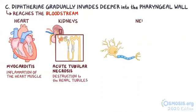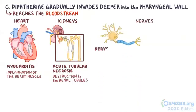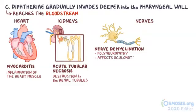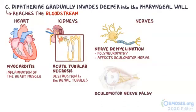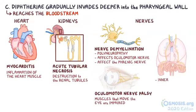C. diphtheriae can also travel to the nerves, causing nerve demyelination, meaning it destroys the myelin sheath covering the nerve axons, which leads to polyneuropathy. Diphtheria polyneuropathy usually affects the oculomotor nerve, causing oculomotor palsy, meaning the muscles that move the eyes are impaired. It can also affect the phrenic nerve, which innervates the diaphragm, and in this case it might cause trouble breathing.